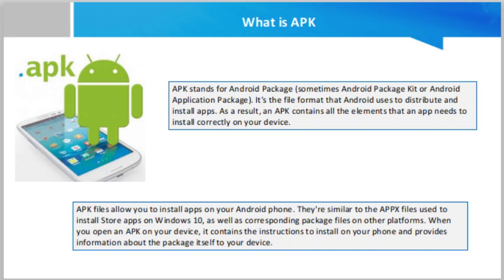APK is an archive file, meaning that it contains multiple files plus some metadata about them. You are probably familiar with other types of archive files like ZIP and RAR as well. Generally, archive files like ZIP are used to combine multiple files into one in order to make them more portable, or to compress them to save space.